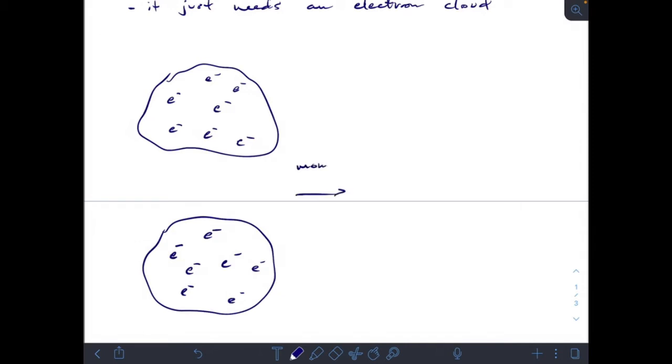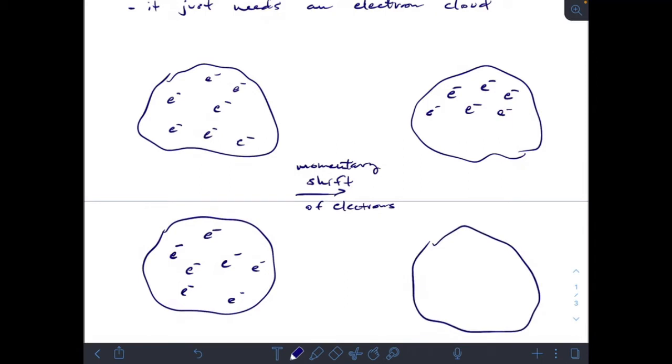And what happens is, if we have a momentary shift of electrons, let's say for just a moment, most of the electrons in that cloud are on one side of it. Because they're in constant motion. And let's say the molecule next to it also has a similar shift. And what we end up with is a negative side. Because all the negatively charged electrons are on one side of the cloud. And that creates a positive side as well. And so for just a moment, we have an attraction.